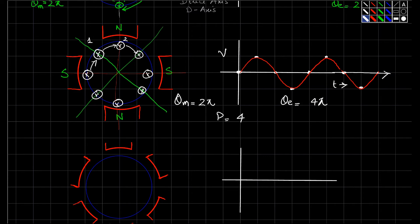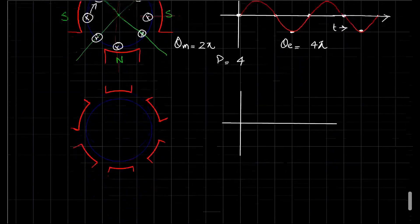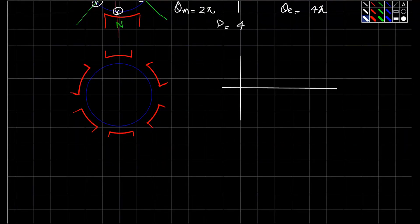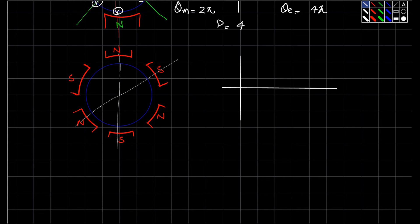The previous case was for two poles. Now for a 6-pole motor: we have north, south, north, south, north, south — six poles total — with three quadrature axes and three direct axes. The green lines represent the magnetic neutral axes. We identify one direct axis, a second direct axis, and a third direct axis.